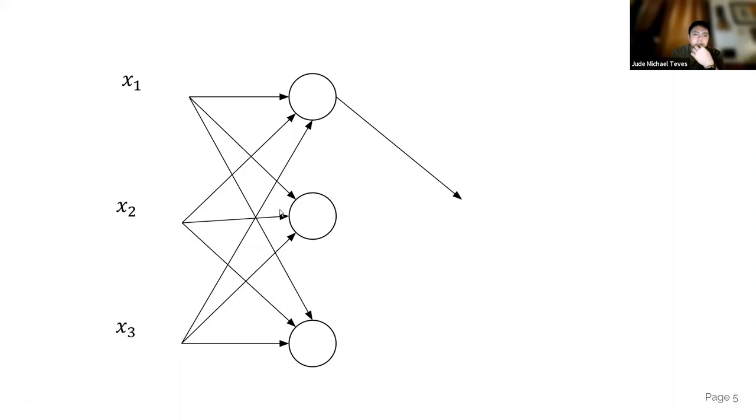So you have three nodes here, and then the output of those three nodes are going into another node. That's going to be your output.